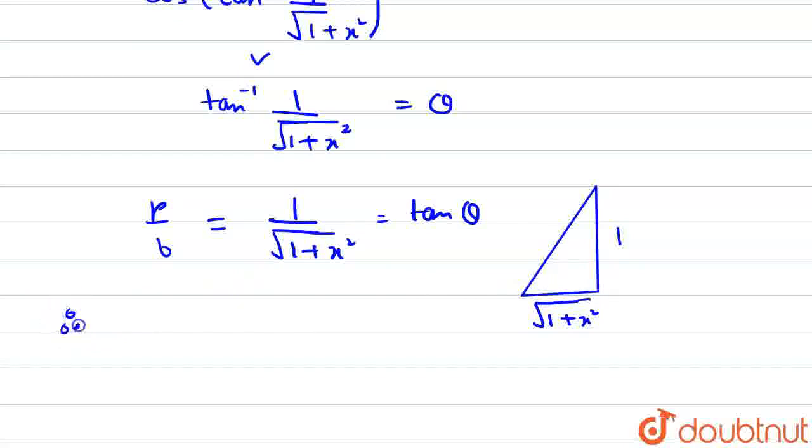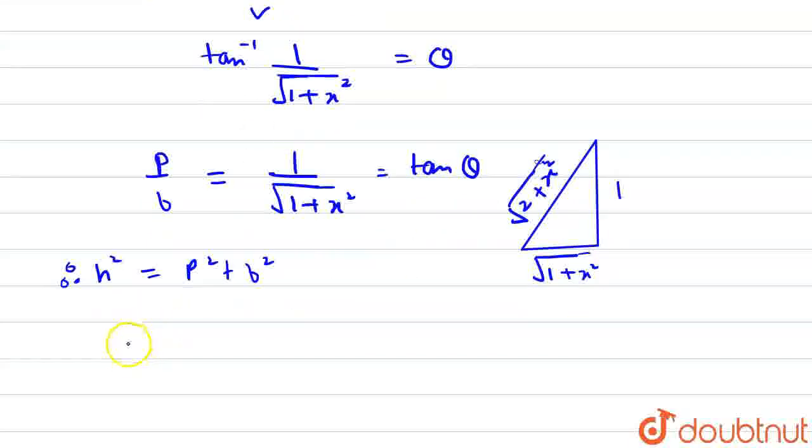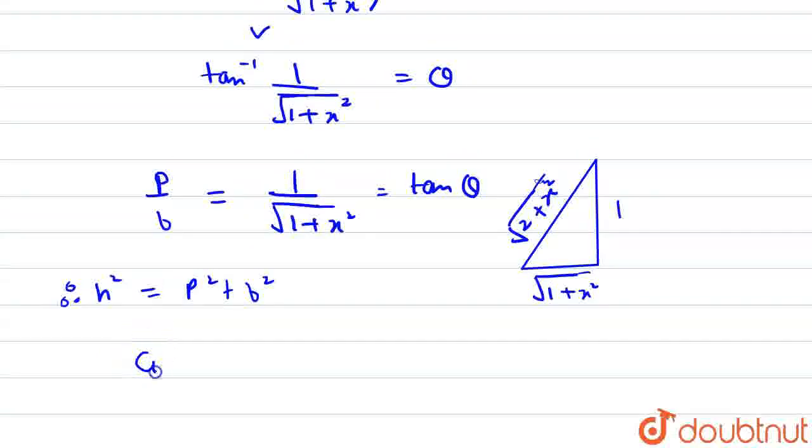Now, using formula h squared is equal to b squared plus p squared. Now, in terms of inverse cosine we will get first of all cos theta is equal to base upon hypotenuse is equal to base is root of 1 plus x squared. Hypotenuse is root of 2 plus x squared.